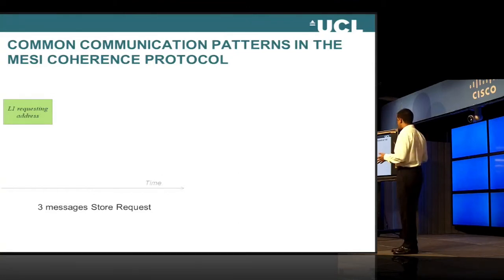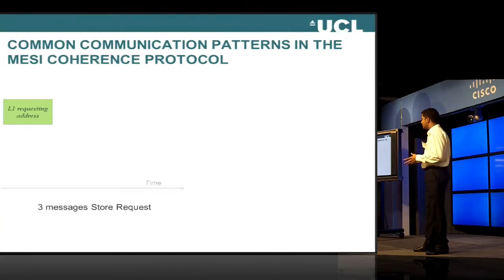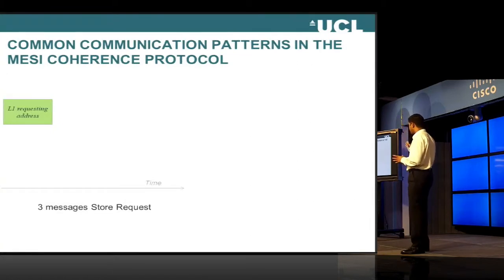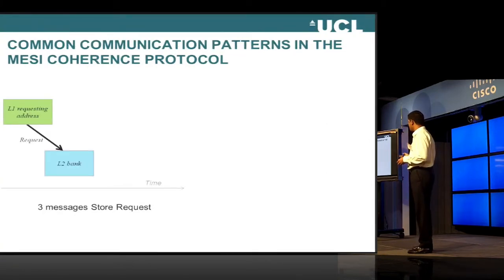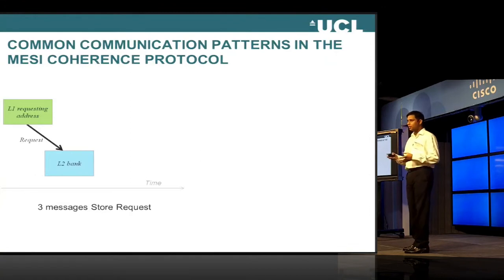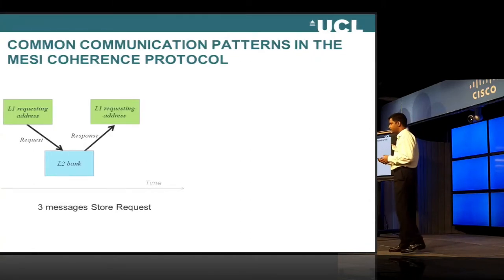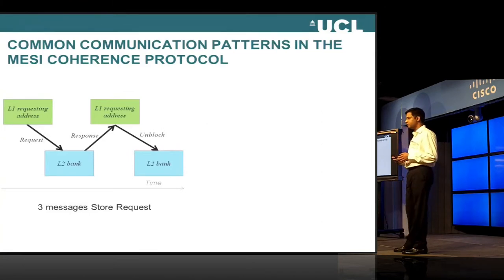Now, how are we going to determine the actual circuit period? We use the information contained in the cache coherence protocol. There are a set of already predefined patterns from the finite state machine of the cache coherence protocol that would actually take place. We are going to consider two of them, both of which are store requests. The green color represents one core and the blue color represents a second core. In this pattern, the first core is requesting an address which is found in the second core. A request message would be sent from the first core to the L2 bank of the second one. The second core has the address and will send a response message back to the L1 of the first core. The first core will then send an unblock message to the L2 bank of the second core, saying that it has received the address.